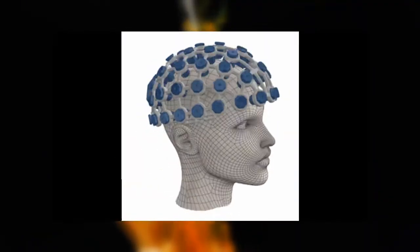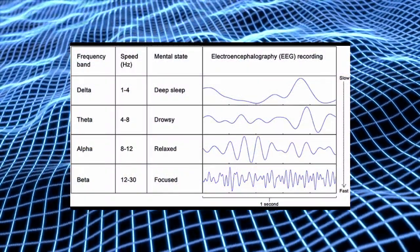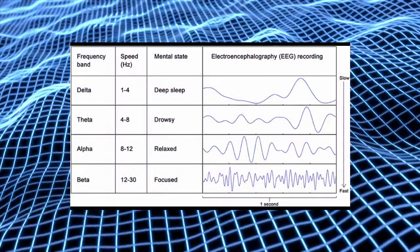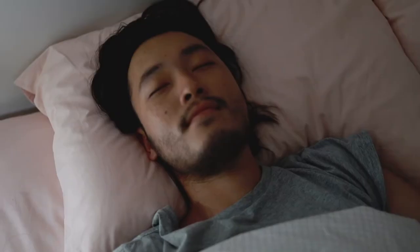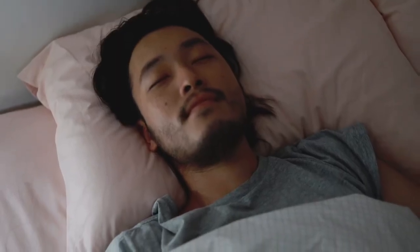These aggregate brainwaves are classified into bands that represent certain frequency ranges. Using these categories, we can track changes in the brain's activity and its synchronisation.